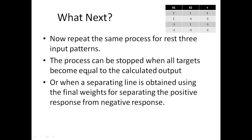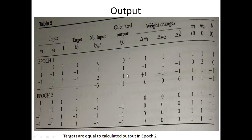When are we going to stop? When all targets become equal to the calculated output, or we get a separating line obtained using the final weights for separating positive response from negative response. If we see the output at the second epoch, the calculated output and our target values are the same. After this epoch we have achieved our target, so we can stop the algorithm.